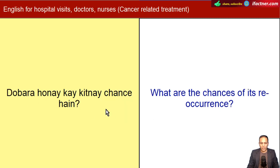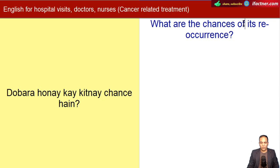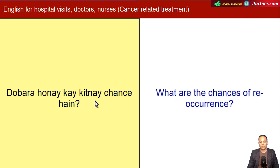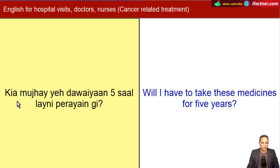Dobara hone ke kitne chances hain? What are the chances of reoccurrence? Kya mujhay yeh dawain paanch saal leni padhengi? Will I have to take these medicines for five years?